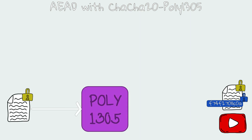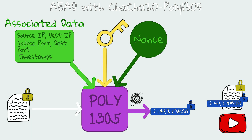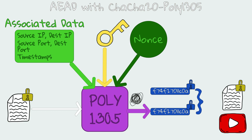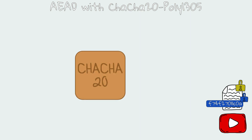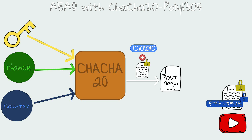Now YouTube needs to decrypt and verify the message. It performs the exact steps in reverse. First, verification: YouTube will calculate the authentication tag from the received ciphertext, the shared secret key, the associated data, and the nonce. YouTube will compare the calculated authentication tag with the received authentication tag. If they both match, YouTube knows that the received message has not been altered. Now that YouTube has verified the integrity of the message, it needs to decrypt it. The ChaCha20 algorithm will be used with all the necessary inputs to generate the same key stream. This pseudo-random stream will be XOR'd again with the received ciphertext to produce the plaintext. And that's it — this was an example of an AEAD cipher.